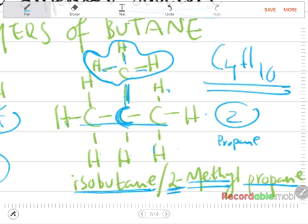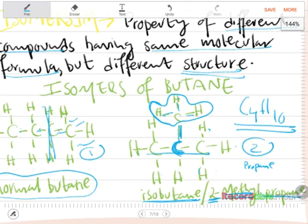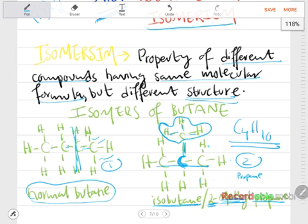So why 'methyl'? Because there's one carbon atom in the branch — it's not all hydrogens. And 'two' because the branch is on the second carbon atom. Quick recap: isomerism is the property of different compounds having the same molecular formula but different structures.